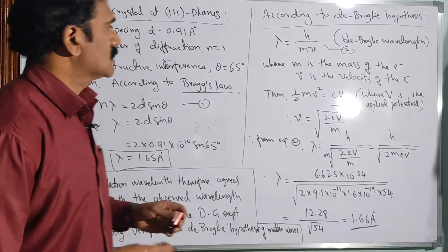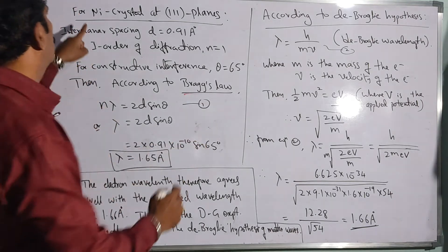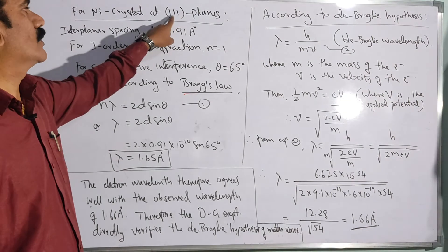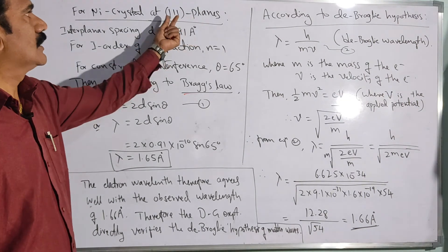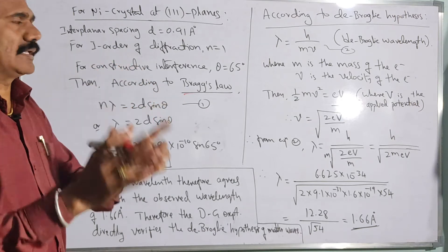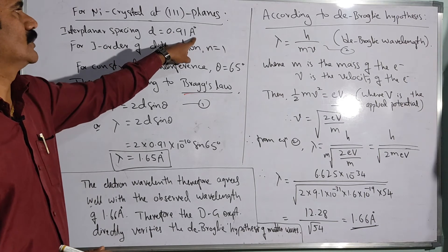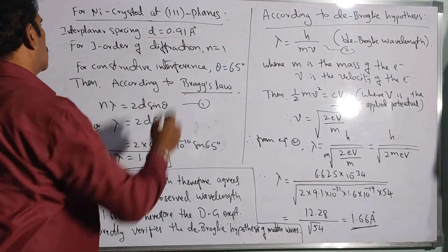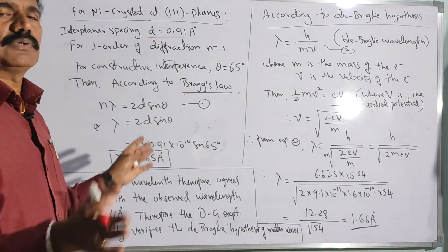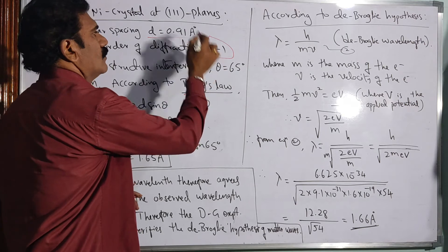Now look at the calculations. Let us consider the calculation according to Bragg's law. For nickel crystals, we are using the Miller indices planes 1-1-1. For that, there is an interplanar spacing according to crystal structures. You can find out the interplanar spacing for various crystal planes. That interplanar spacing is d equal to 0.91 angstrom units for the nickel crystal. For the first order diffraction according to Bragg's law, it is possible to get diffraction at various orders. For first order diffraction, n is equal to 1.